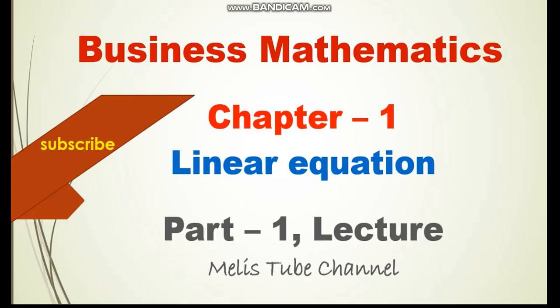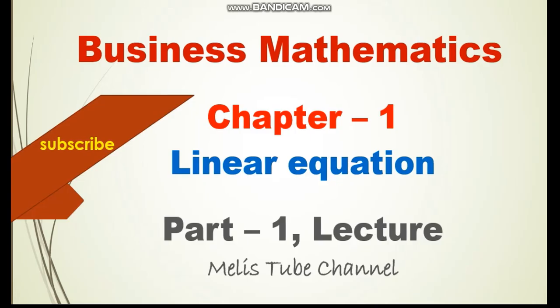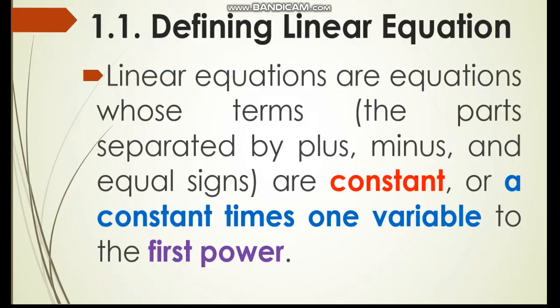What is linear equation? Linear equations are equations whose terms, the parts separated by plus, minus, and equal signs, are constant, or a constant times one variable to the first power. We can write linear equations using constants, or constant times one variable, but the exponent for the variable must be 1.